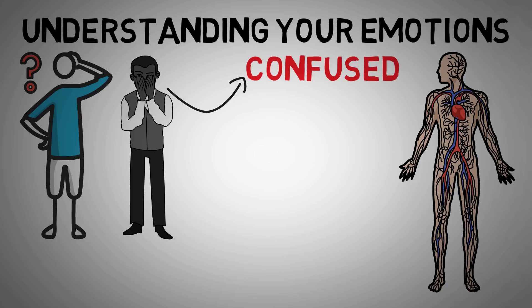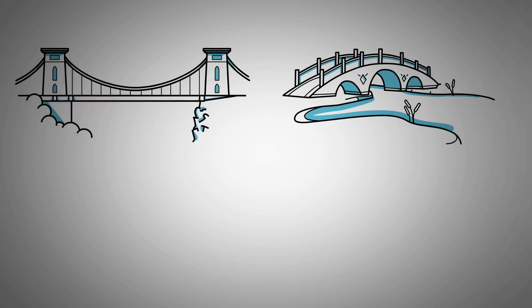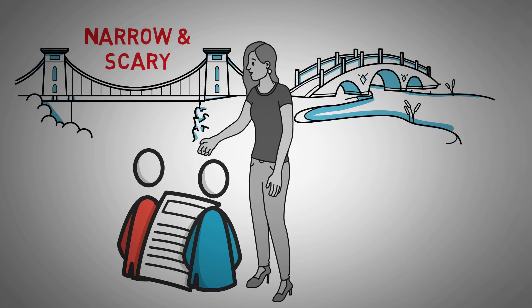A study that attempted to disprove the two-factor theory of emotion involved men on a bridge. The participants were asked to walk across two different bridges — one bridge was more narrow and scarier than the other. At the end of each bridge, there was a woman who gave the men a questionnaire and told them to call her with questions or comments. Interestingly, the researchers found that the men who walked across the scary bridge were much more likely to call the woman and, in their phone call, tell stories that contained sexual content.